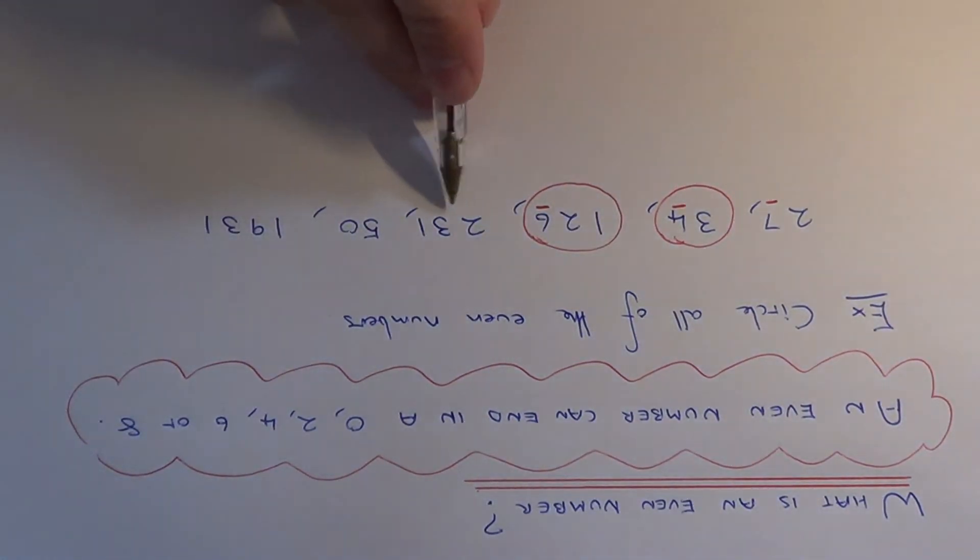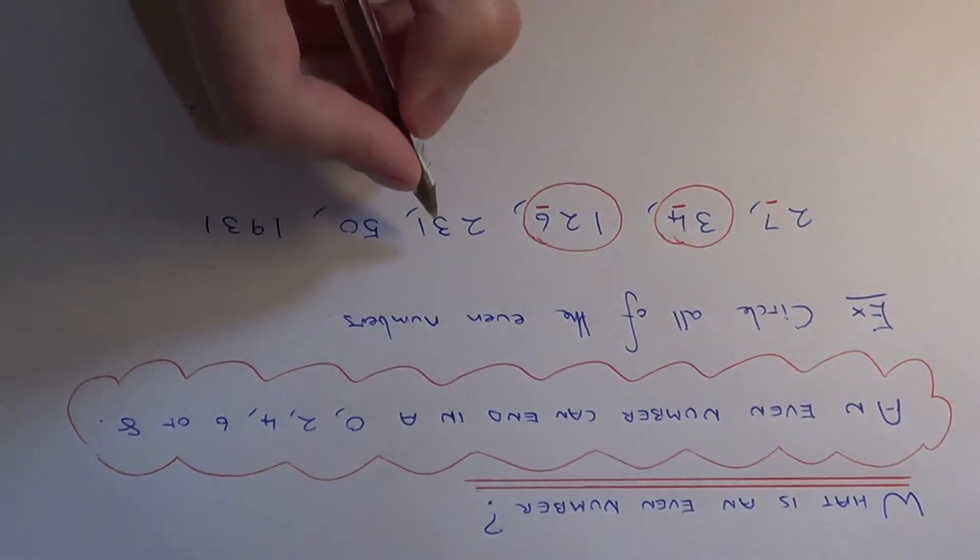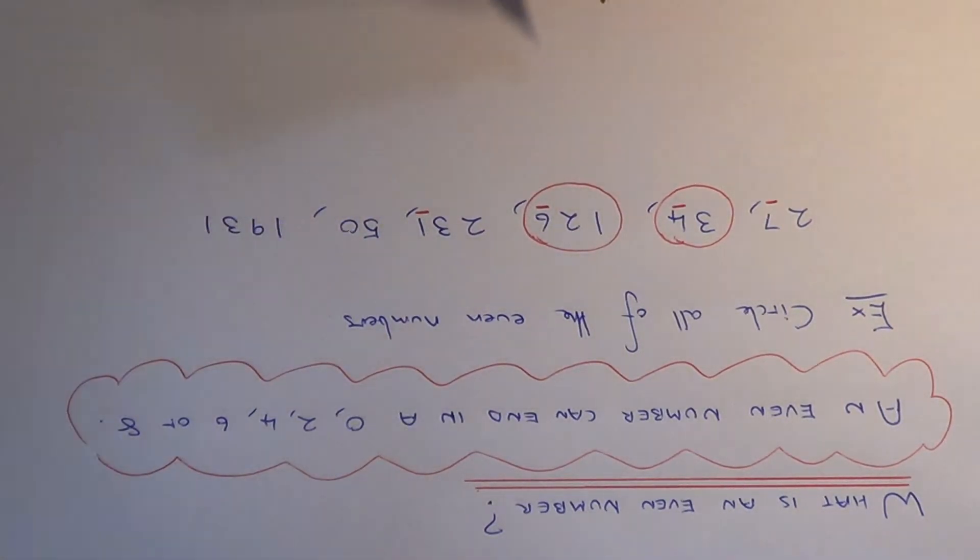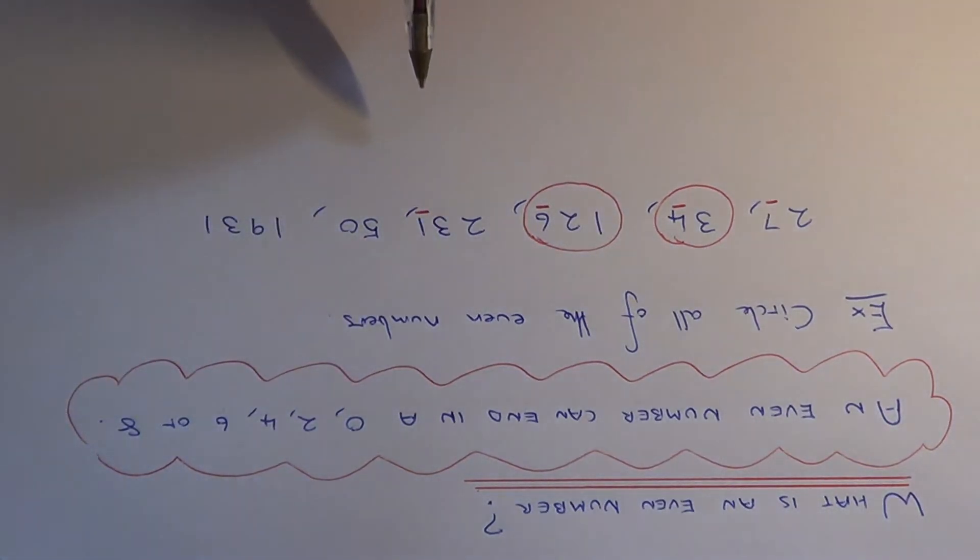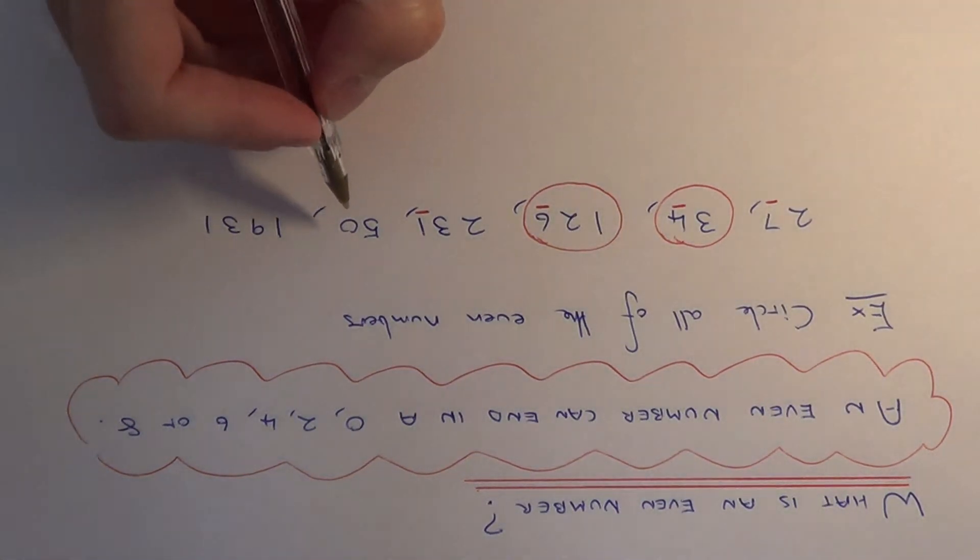So let's look at our next one, 231. So again, just look at the last digit, which is a 1. 1 doesn't appear in this list above, so 231 is not an even number.